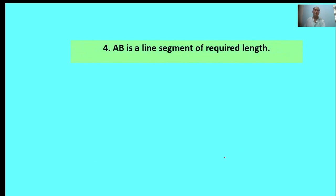Fourth: AB is a line segment of required length. AB is a line segment. This is called 4.7 centimeters required length line. Second topic: